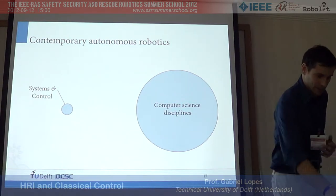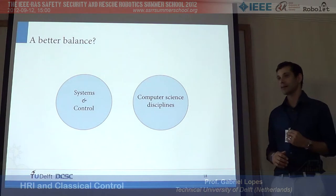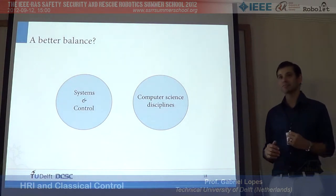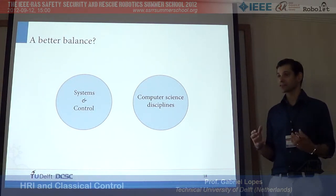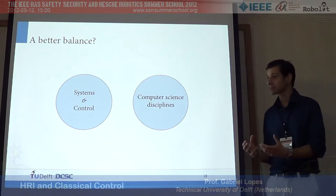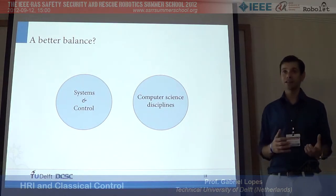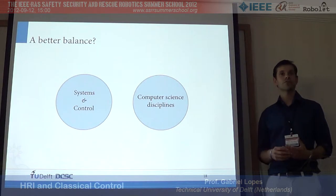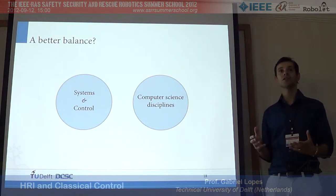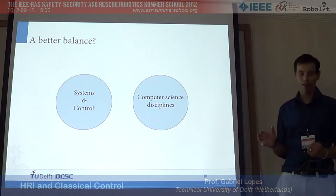I wonder: is there a better balance? Systems and control is a lot about controlling systems that are physical and interacting with the environment. Since we have robots that interact with the environment and exchange energy, maybe there's something that systems and control can help with.